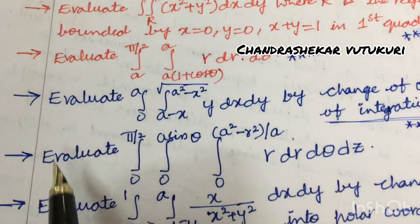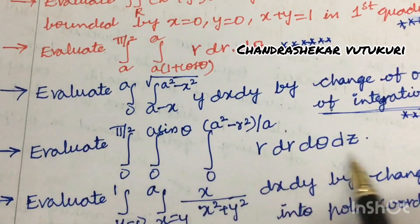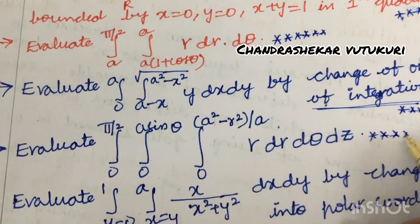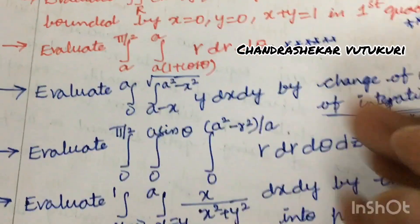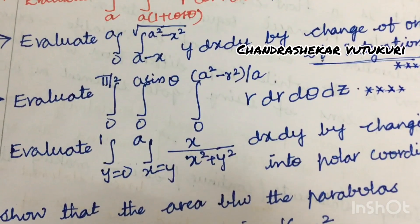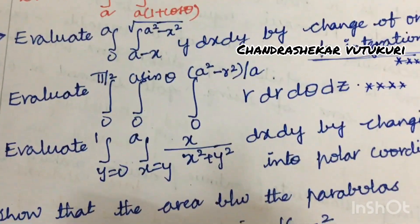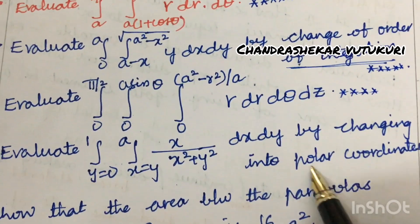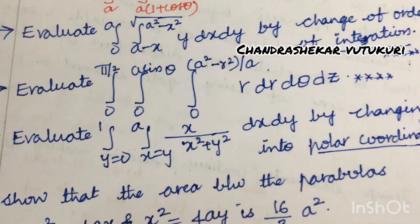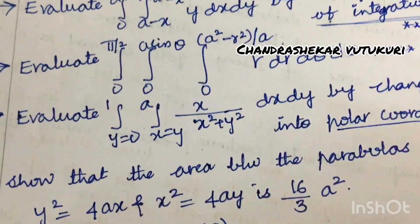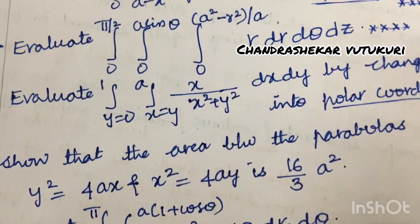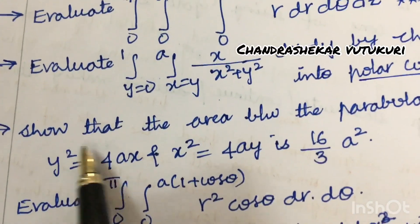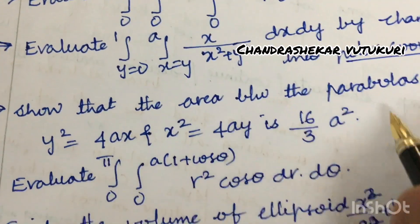Evaluate the triple integration — this is one of the very important questions from unit 3. I have taken around 7 to 8 highlighted questions from this unit. Please work out all these so you are guaranteed two questions from this set. Also evaluate double integration by changing to polar coordinates — very important. Please practice at least one unit daily.